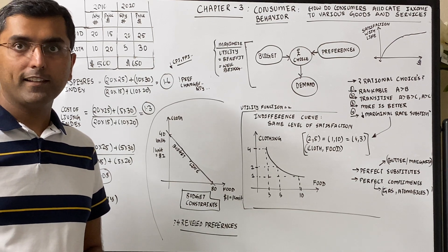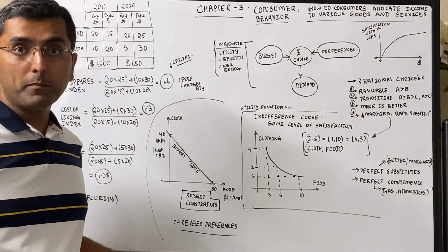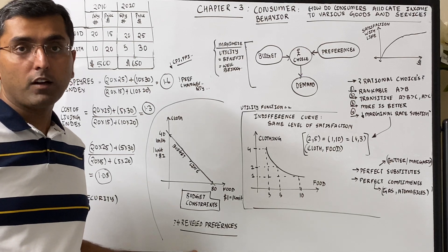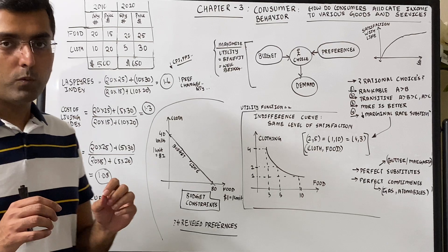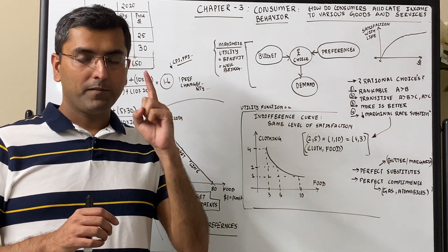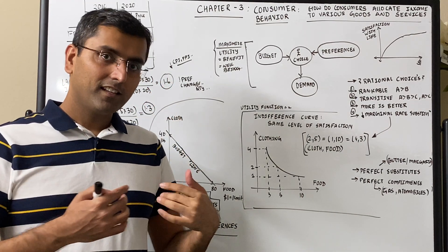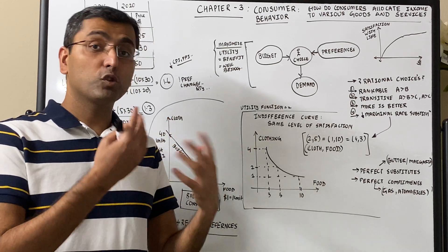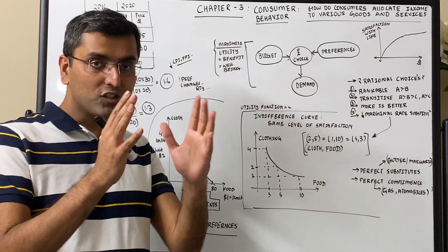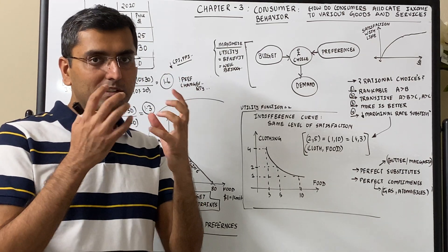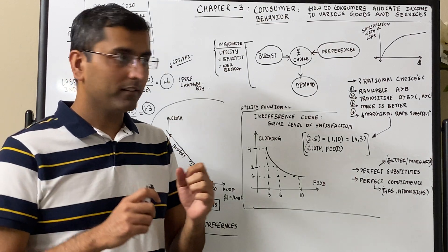Chapter 3: Consumer Behavior. Consumer behavior is the basis of all the demand in the marketplace. In the last few chapters, we looked at three big entities: the consumers from which demand generates, and the producers which produce goods and services in the marketplace. So now we're going to go deep into consumer behavior — how is consumer behavior shaped and what is the basis of demand?